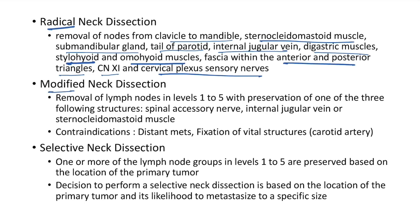Modified neck dissection: remove lymph nodes in levels 1 to 5 with preservation of one of the following three structures — spinal accessory nerve, internal jugular vein, or sternocleidomastoid. Contraindications for modified neck dissection: presence of distant metastasis and fixation of vital structures like the carotid artery.